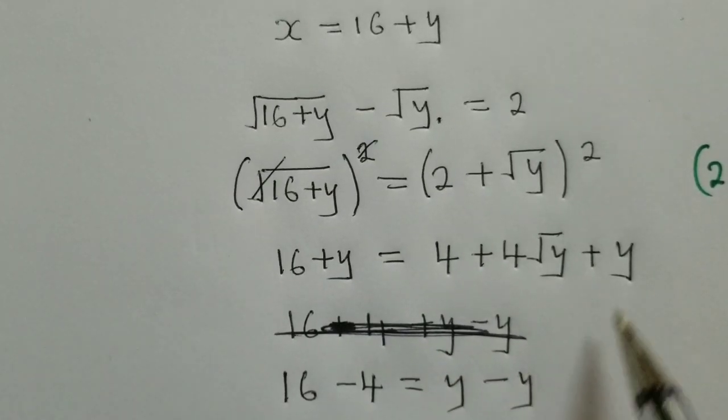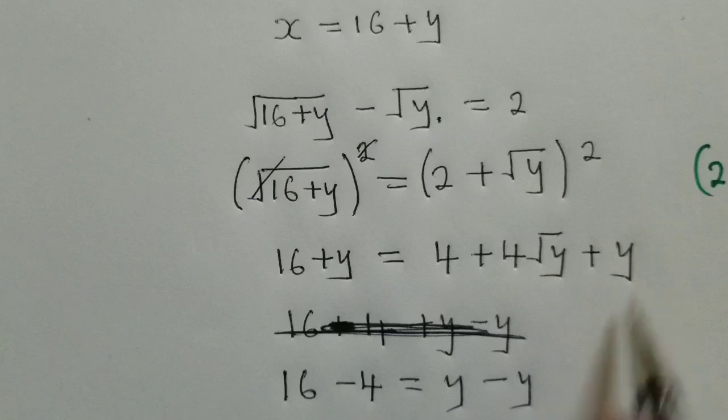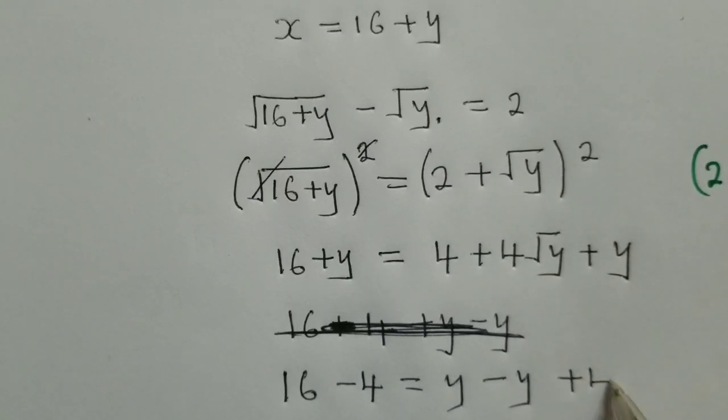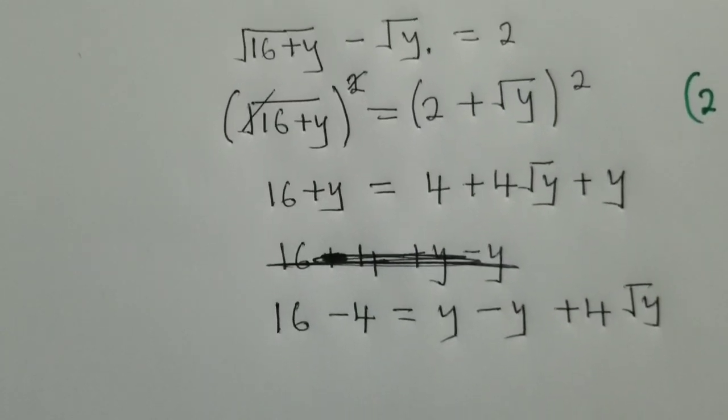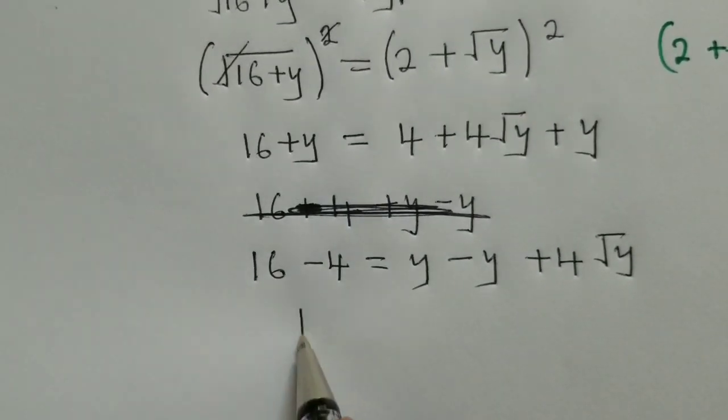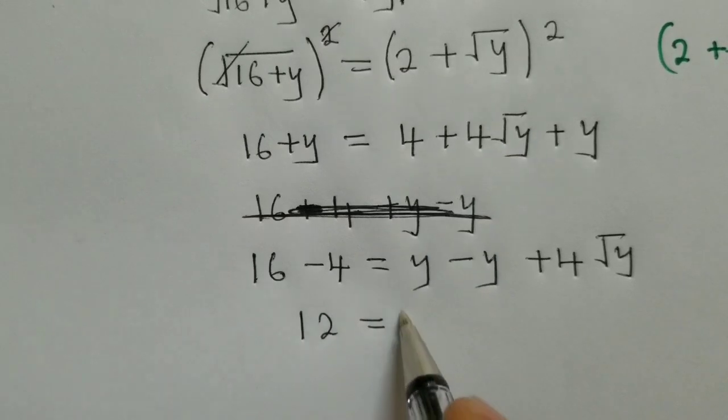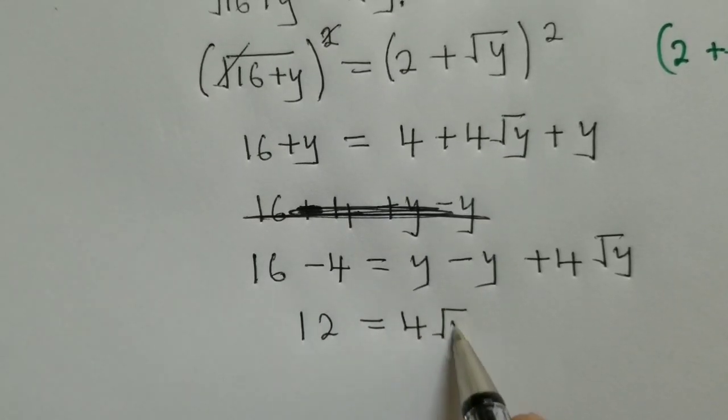So we have 16 minus 4 is equal to y minus y, this y, minus y, plus 4 root of y. Now from this stage, we shall have 12 here is equal to 4 root of y.